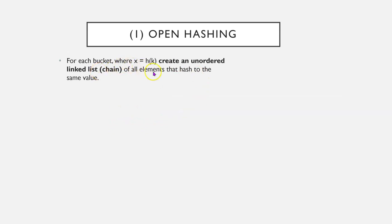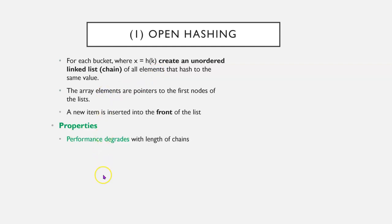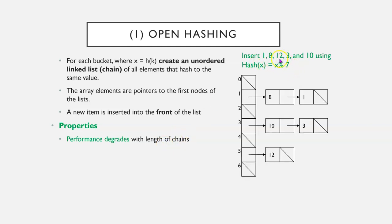Open hashing is, for each bucket where x equals h of k, create an unordered linked list of all elements that hash to the same value. The elements are pointers to the first nodes of the list. A new item is inserted into the front of the list. Properties include, performance will degrade with the length of the chain. So the more collisions you have, the worse your performance will be. So in this example, if we insert 1, 8, 12, 13, and 10 using x mod 7, we're going to get a list. 8 is going to hash to 1, 1 will hash to 1, 10 will hash to 3, and so forth. So we will get some chains.